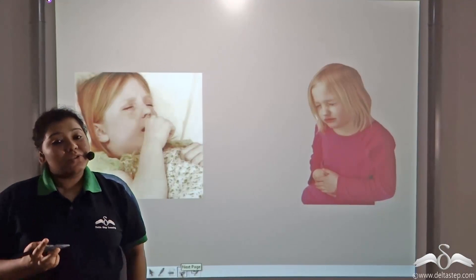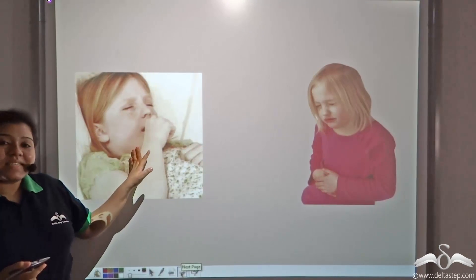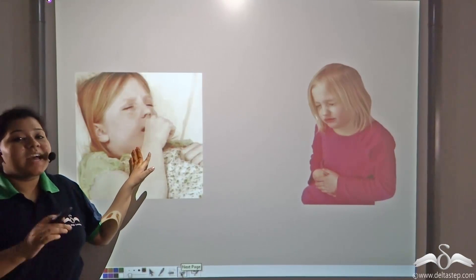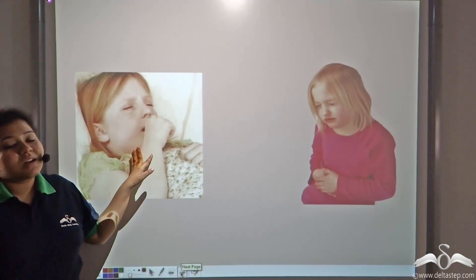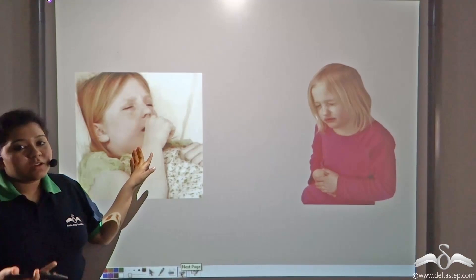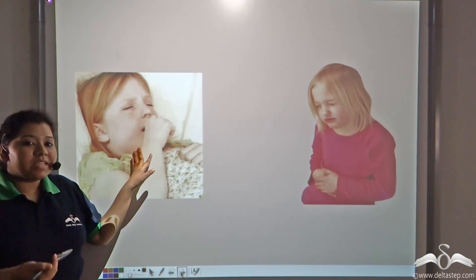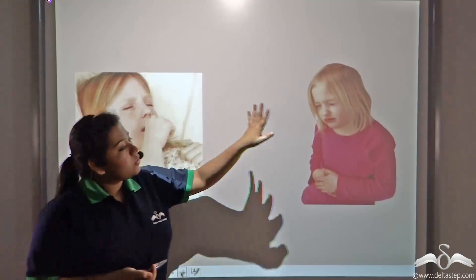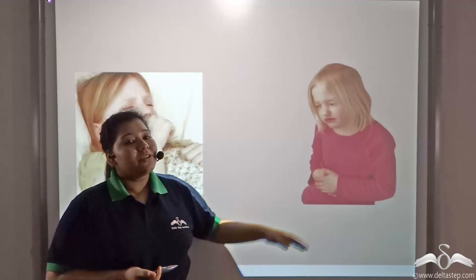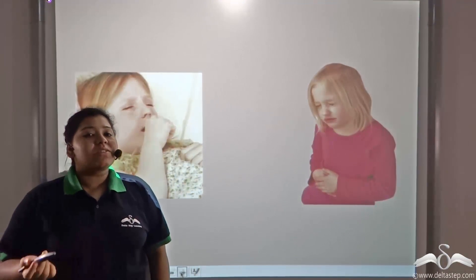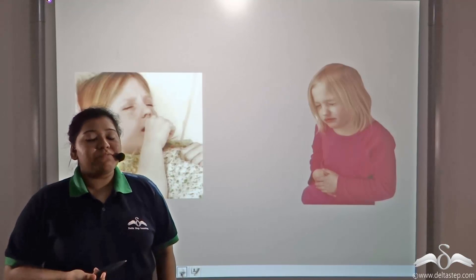There are two kinds of diseases: communicable diseases, which can spread from one person to another through air, water, and any other mediums; and non-communicable diseases, which cannot spread from one person to another through any kind of medium.